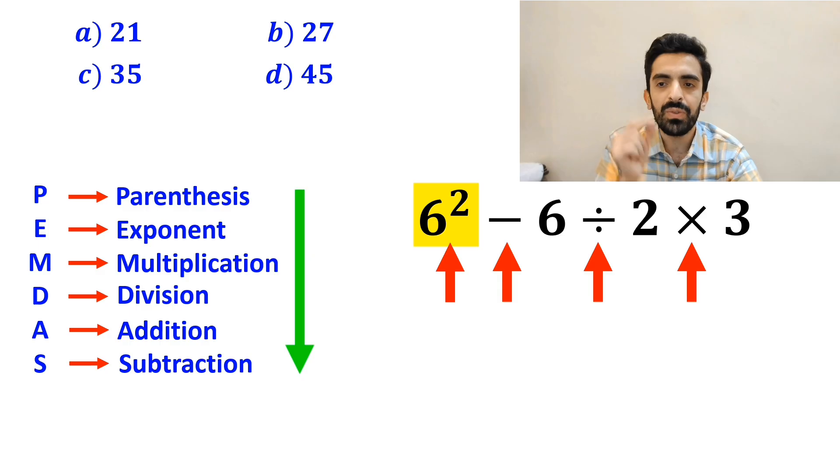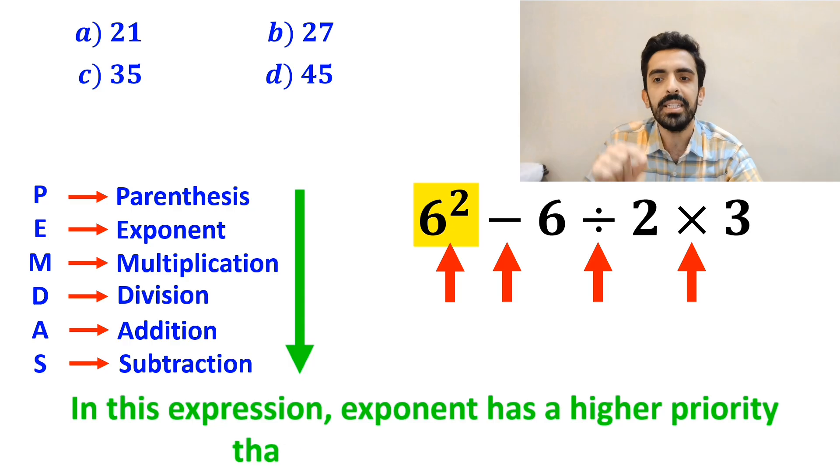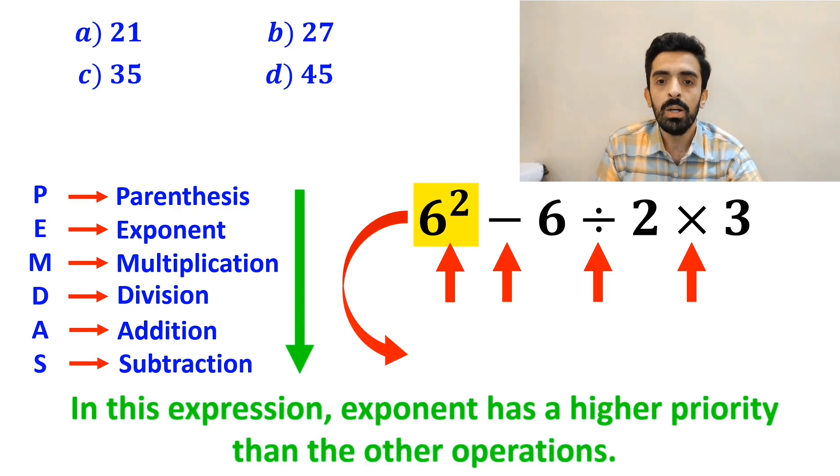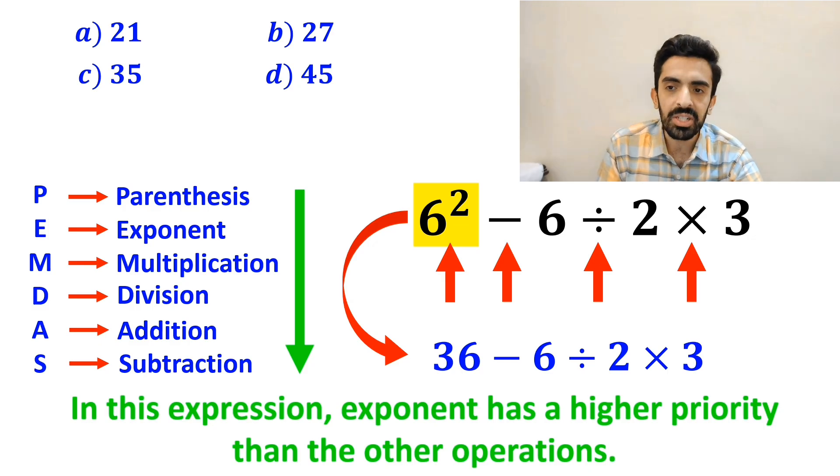We should start with the exponent first, because in this expression, exponent has a higher priority than the other operations. So, this expression simplifies to 36 minus 6 divided by 2 times 3.